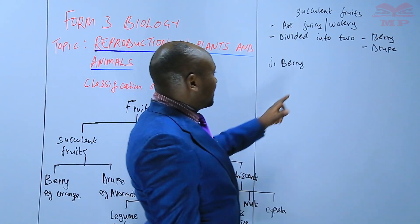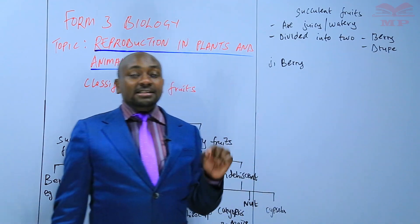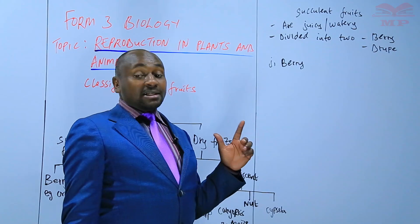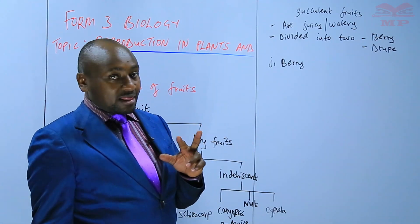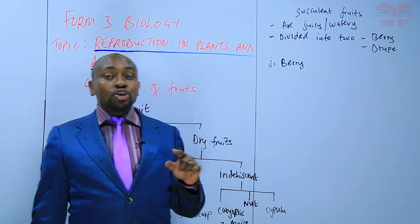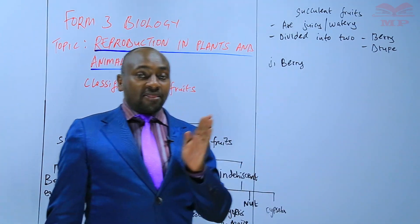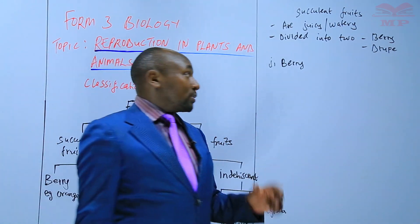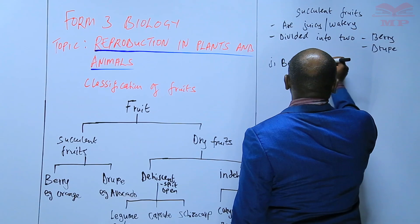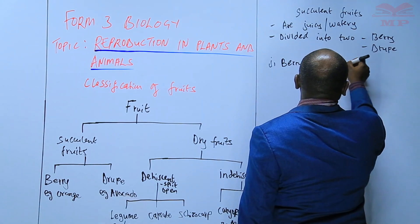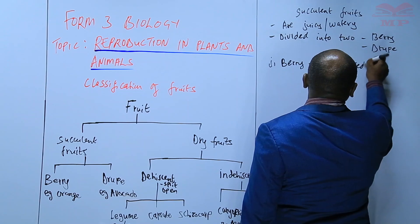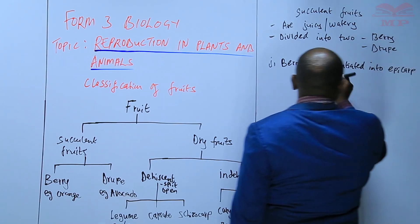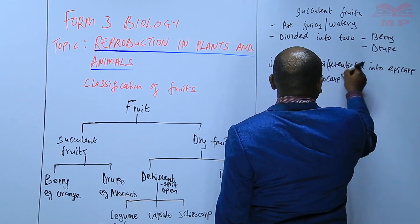For the case of a berry, the berry has a succulent pericarp that is differentiated into three: that is epicarp, mesocarp, and endocarp. All three layers are succulent. The pericarp, which is the fruit wall, is differentiated into epicarp — also known as exocarp, which is the external layer — then the middle layer, the mesocarp.